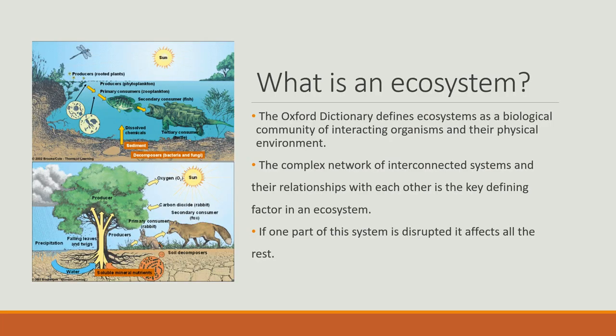We're going to start with what an ecosystem is. The Oxford Dictionary defines ecosystems as a biological community of interacting organisms and their physical environment. This complex network of interconnected systems and their relationships with each other is the key defining factor of an ecosystem. If one part of the system is disrupted, it affects all of the rest.